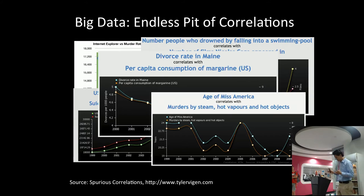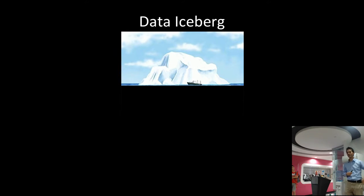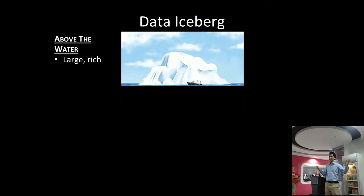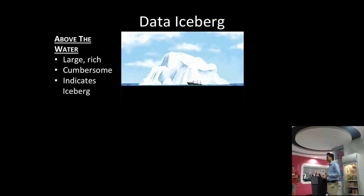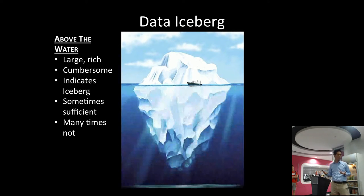The takeaway is that when we look at data and social systems, it's really what I call a data iceberg. What we see in our data is really above the water. There's a boat — you see an iceberg, there must be an iceberg underneath. What's above the water is large data — it's cumbersome to work with. And there is an iceberg underneath. Maybe if you see an iceberg floating above water you should avoid it — it's sometimes sufficient for many purposes. But many times it can be disastrous.